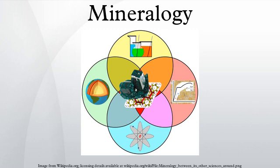Systematic mineralogy is the identification and classification of minerals by their properties. Historically, mineralogy was heavily concerned with taxonomy of the rock-forming minerals. In 1959, the International Mineralogical Association formed the Commission on New Minerals and Mineral Names to rationalize the nomenclature and regulate the introduction of new names. In July 2006, it was merged with the Commission on Classification of Minerals to form the Commission on New Minerals, Nomenclature, and Classification. There are over 6,000 named and unnamed minerals, and about 100 are discovered each year.